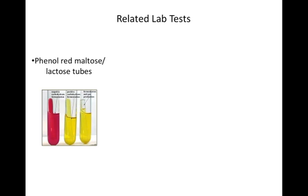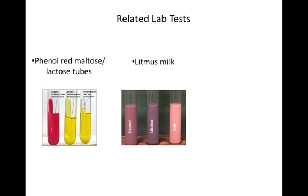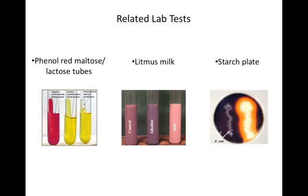Maltose and lactose are both disaccharides. If a bug can digest maltose or lactose, it breaks the bond holding the monomers together and will turn the phenyl red indicator yellow as a result of fermentation occurring in the tube. Litmus milk contains lactose, or milk sugar. If the organism can use the lactose to undergo fermentation, a pink color may develop initially as a result of acidic byproducts. Starch is a polymer of glucose molecules. If an organism can digest starch, clear zones will appear around the bacteria when the plate is flooded with iodine.